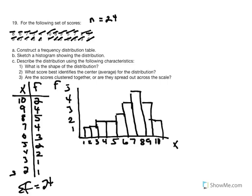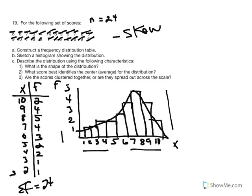Now we can get a sense of the shape. Based on where the highest frequency is occurring, we determine if it's positively or negatively skewed. Drawing a soft curve over the distribution, because the higher x values have higher frequency and these lower scores have lower frequency, we would conclude this distribution has a negative skew.